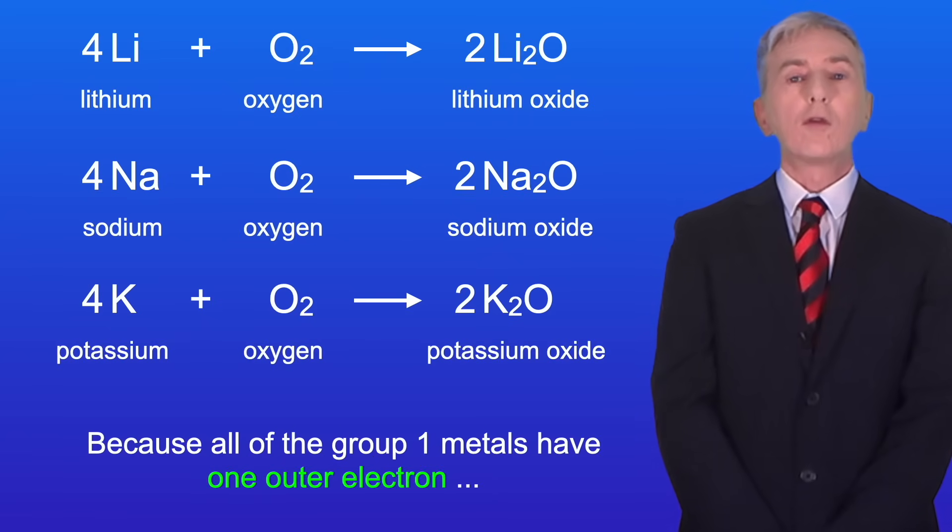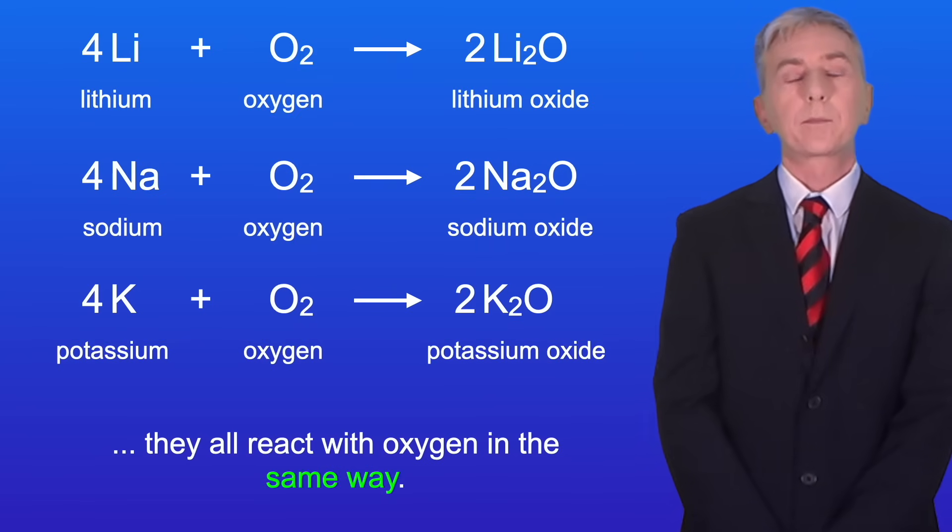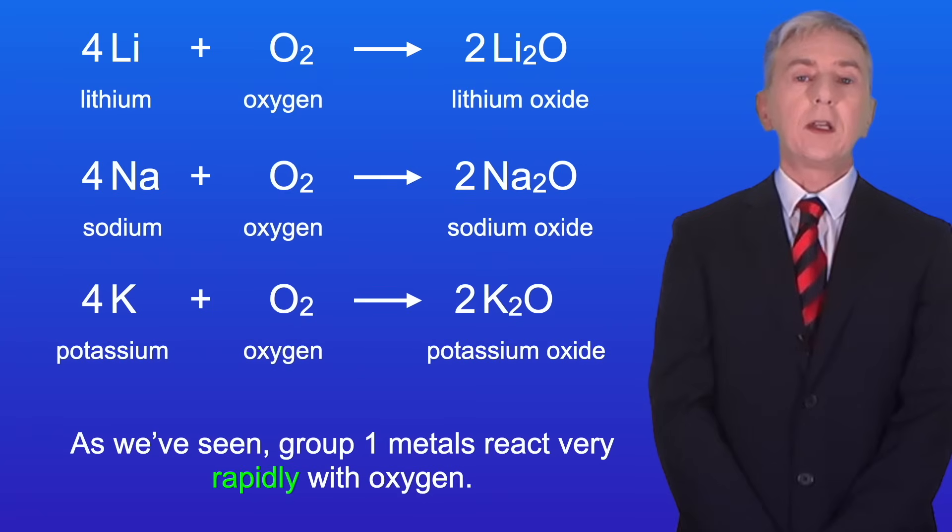Now because all of the group 1 metals have one outer electron, they all react with oxygen in the same way. So as we've seen, group 1 metals react very rapidly with oxygen.